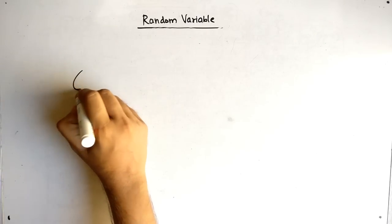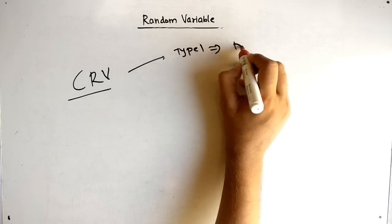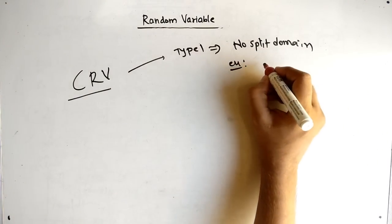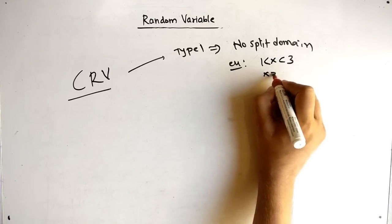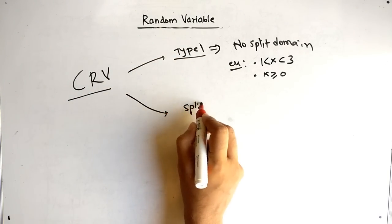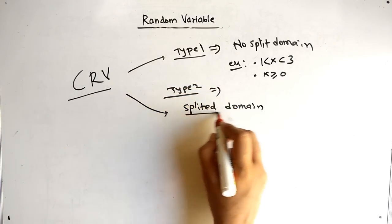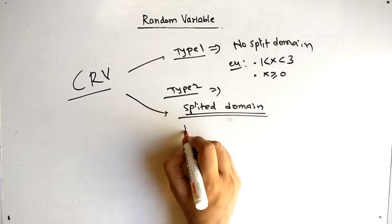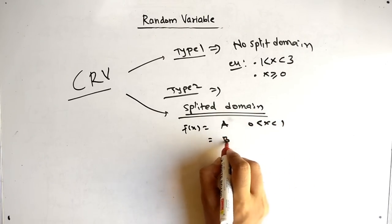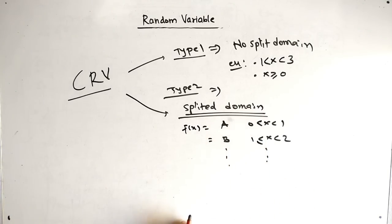In continuous random variables we have two types. Type 1, which we already covered, is no split domain — where x was fixed in a single range like 1 to 3 or greater than or equal to 0. Type 2 is splitted domains, where f(x) has different expressions in different ranges. How to solve Type 2 will be covered in the next video.